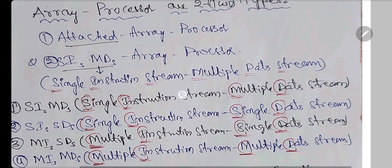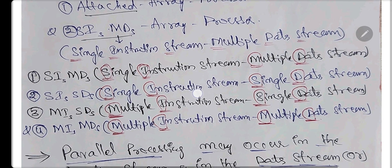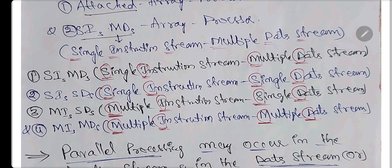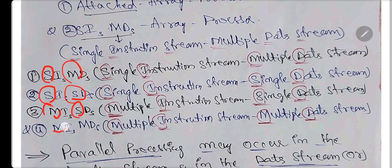Computers are classified into four types by MJ Flynn. Those are SIMD, SISD, MIMD, and MISD. S means Single, M means Multiple, I means Instruction stream, D means Data stream. So: Single Instruction Single Data (SISD), Single Instruction Multiple Data (SIMD), Multiple Instruction Single Data (MISD), and Multiple Instruction Multiple Data (MIMD). Stream means flow of instructions or flow of data.